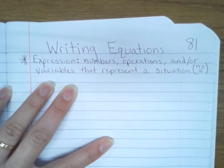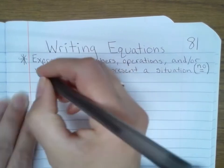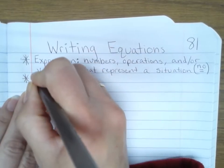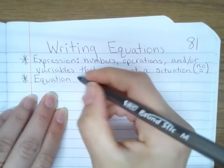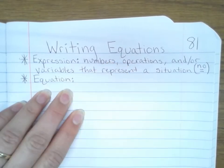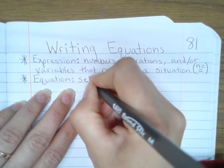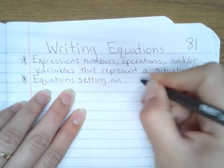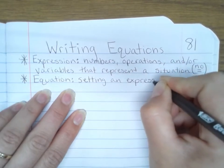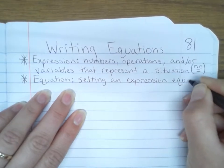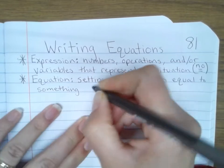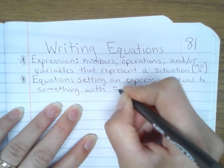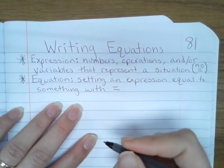So if there's no equal sign in that, the difference between an expression and an equation is that you actually have an equals in there. Okay, so an equation is setting an expression equal to something. So now we have an equal sign. Okay, once again these usually need to represent real life situations.